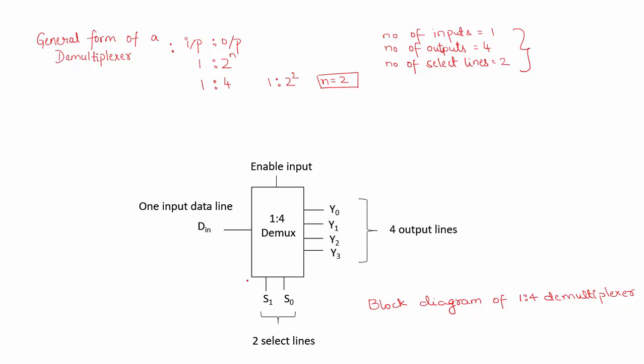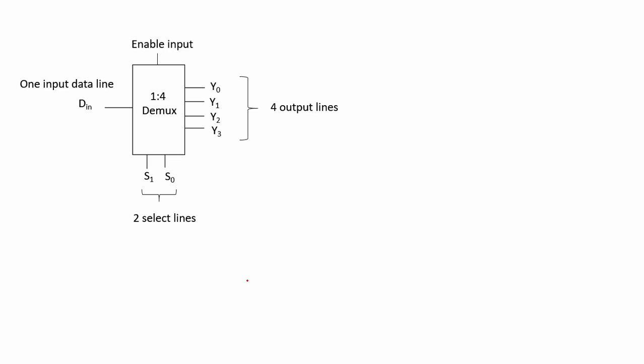Let us now look at the truth table of the 1-to-4 demultiplexer. The truth table and working can be understood from the block diagram. From the definition of a demultiplexer, the input data line is connected to a particular output depending on the combination of select lines. With 2 select lines, there are 4 combinations: 00, 01, 10, and 11.